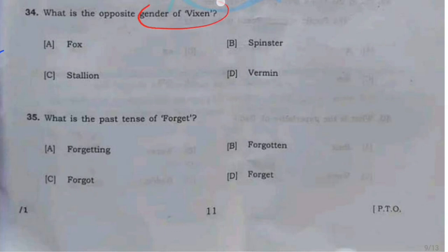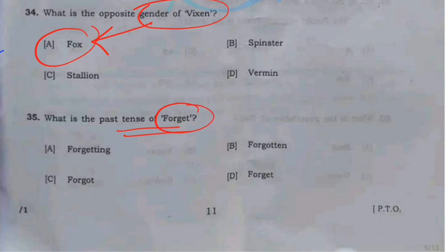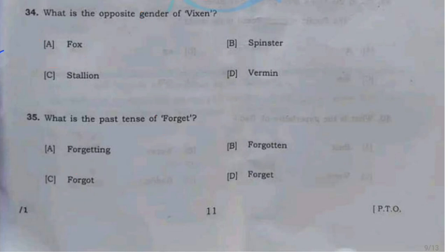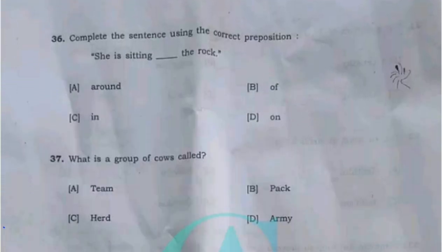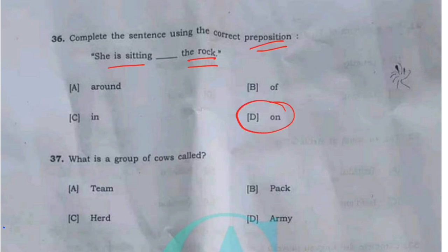What is the opposite gender of vixen? What is the past tense of forget? Forget — past tense is forgot, and past participle is forgotten. The past tense of forget is forgot. The correct answer is forgot.